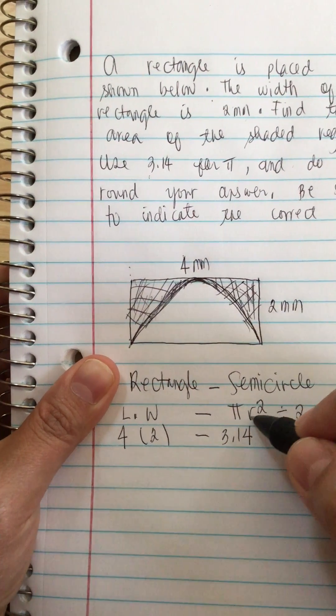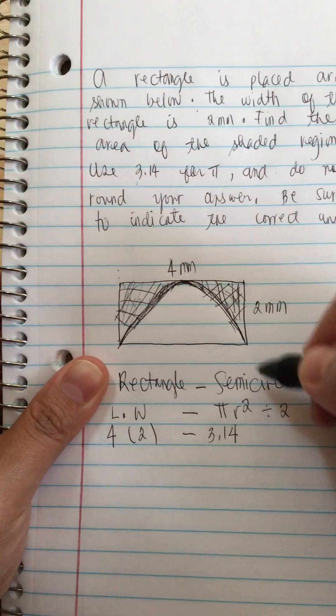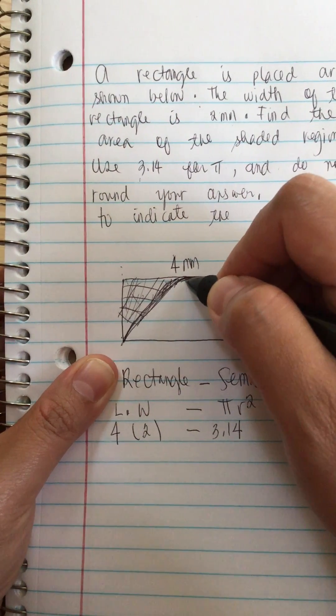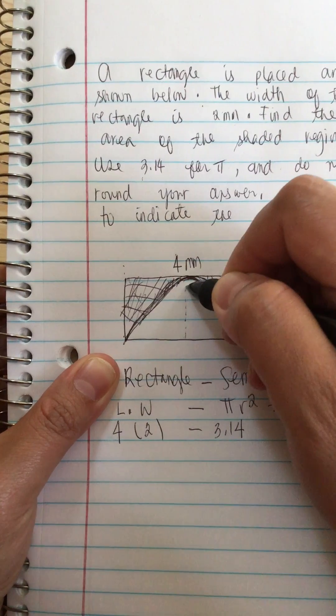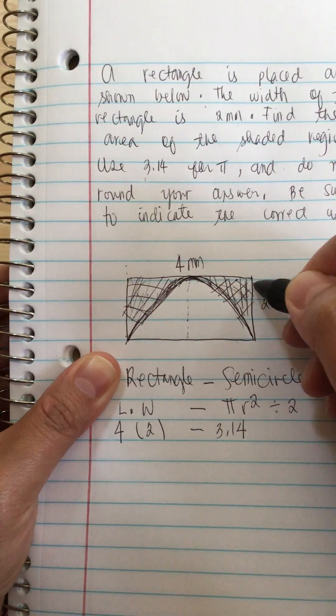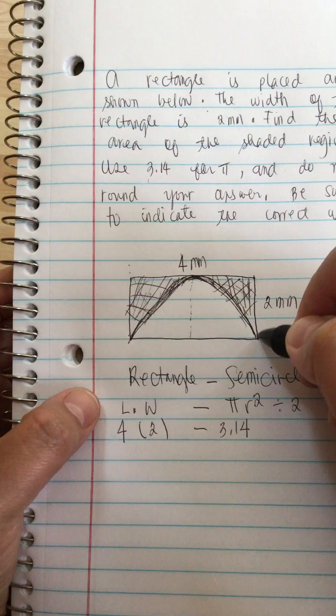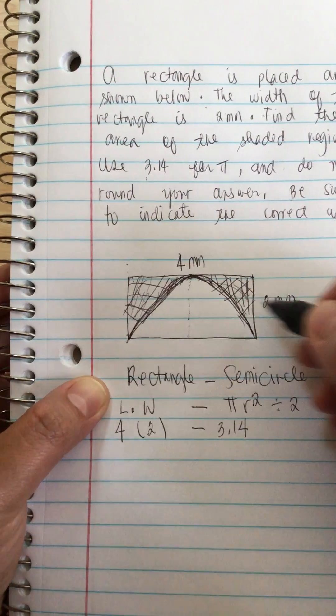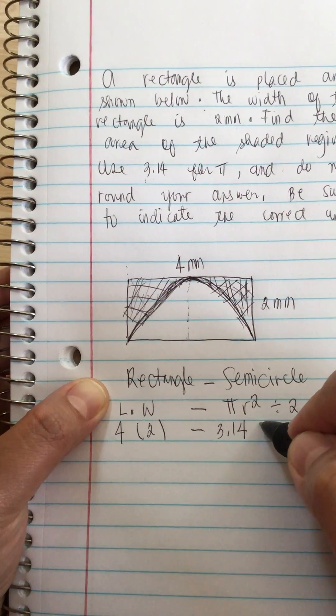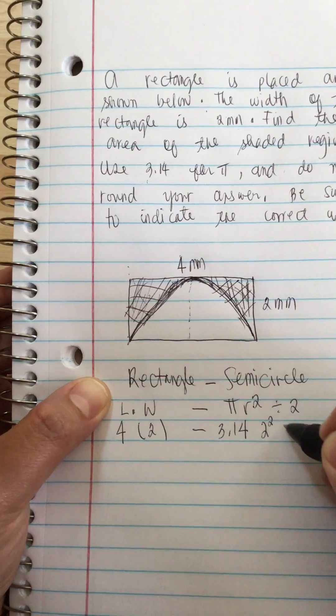And r squared is 2. So if we put a radius here, this is the same as the width of the rectangle. So this is also 2. And this is 2 squared.